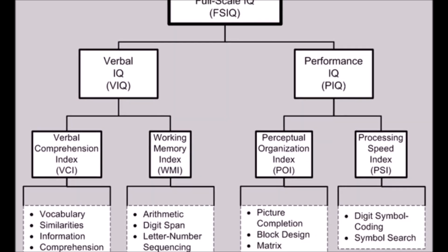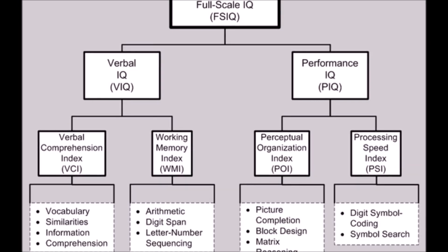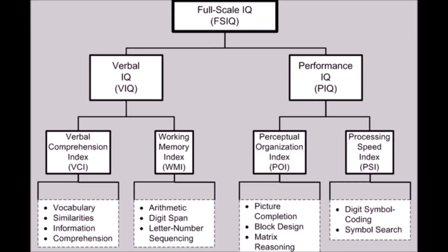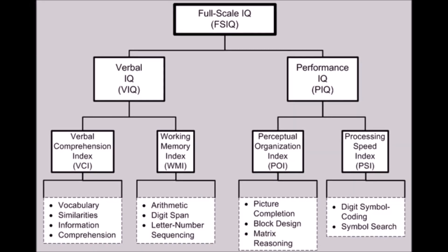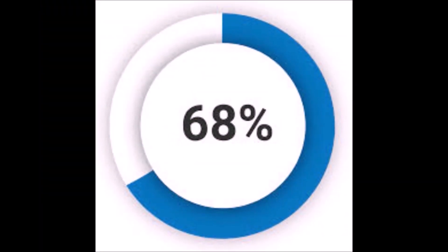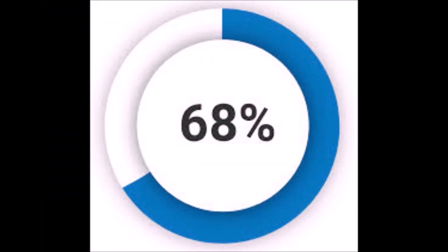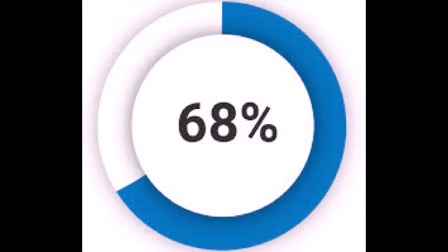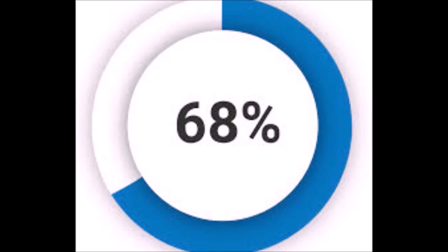For example, the majority of scores — about 68% — on the WAIS-3 tend to lie between plus 15 or minus 15 points from the average score of 100. This means that about 68% of people who take this test will score somewhere between 85 and 115. As you look further toward the extreme ends of the distribution, scores tend to become less common. On the test, very few individuals — in fact, only about 0.2% — get a score of more than 145, which indicates a very high IQ, or get a score of less than 55, which indicates a very low IQ.